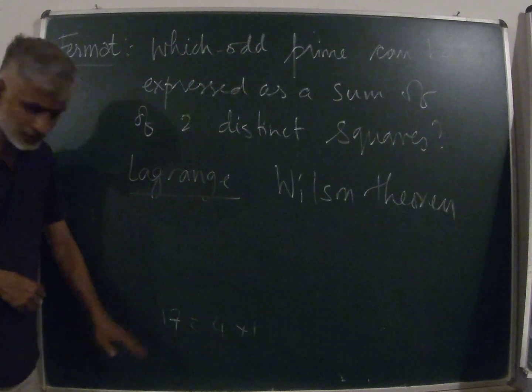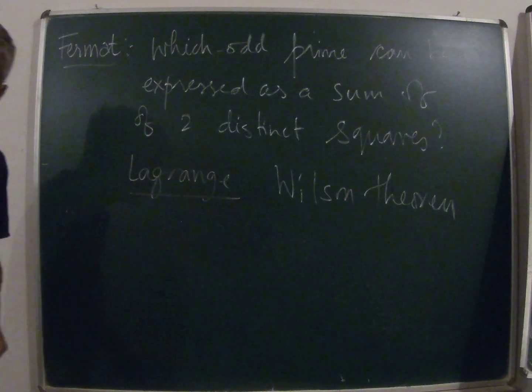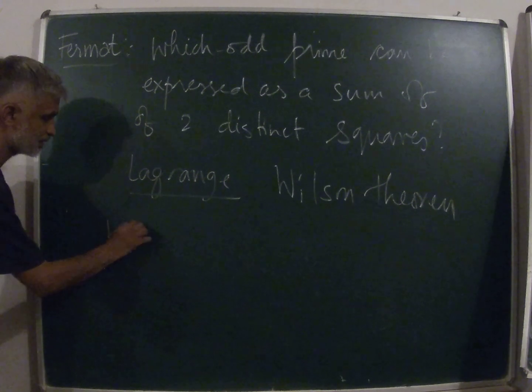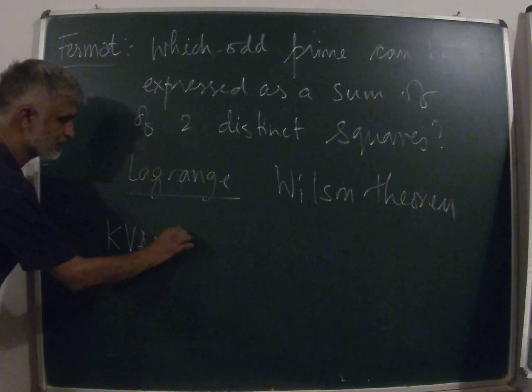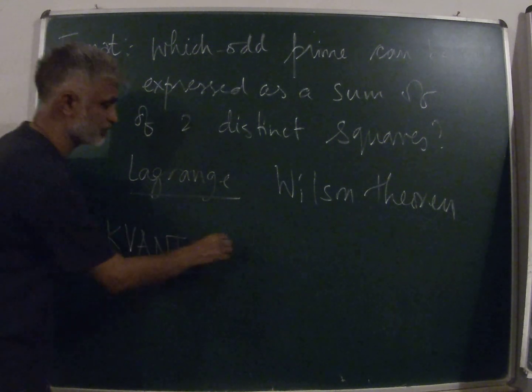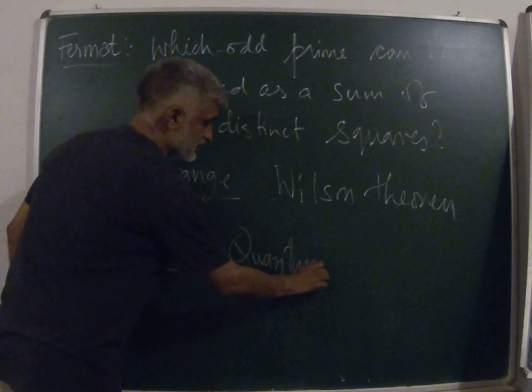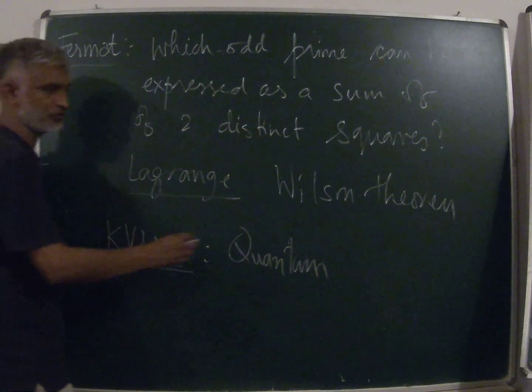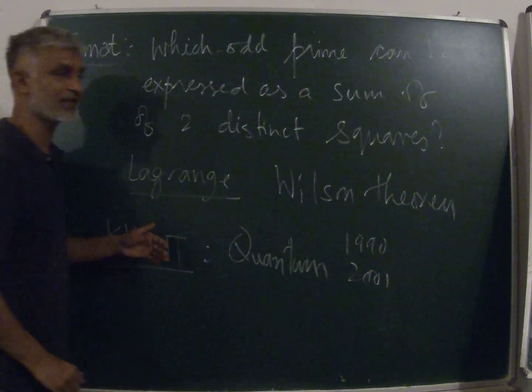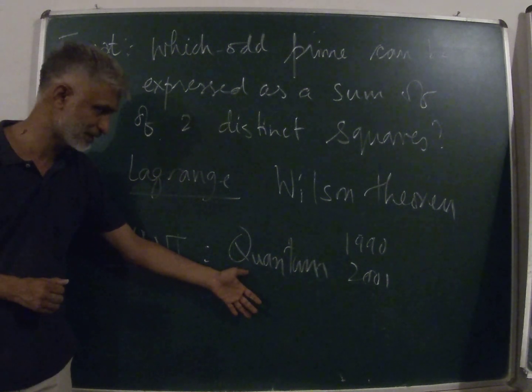Tikamaro also talks about two more proofs for this theorem. These three proofs were presented in an article in Kvant, the Russian magazine. But I was able to find this article, an English version of this same article in Quantum, which is the English version of this Kvant, which ran between 1990 and 2001. I don't have to work too hard here; I just have uploaded this magazine, the particular issue which contains all the three proofs by Tikamaro.